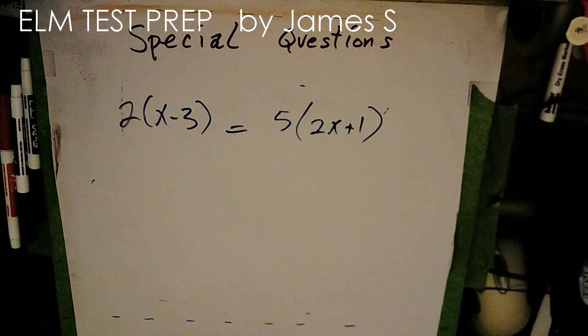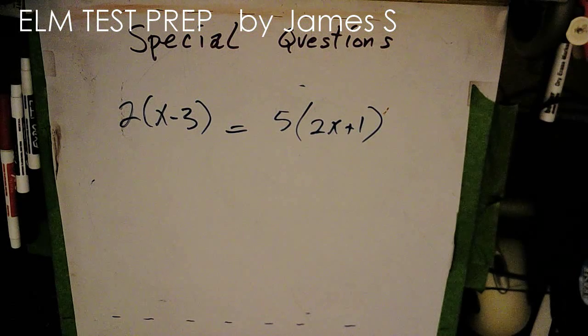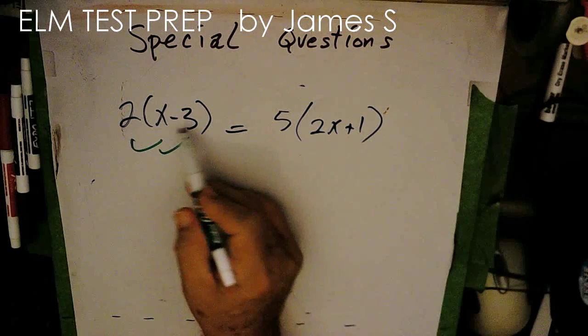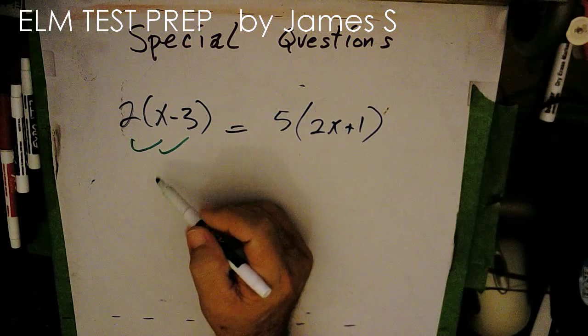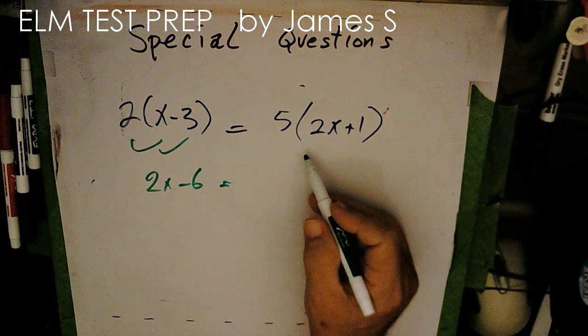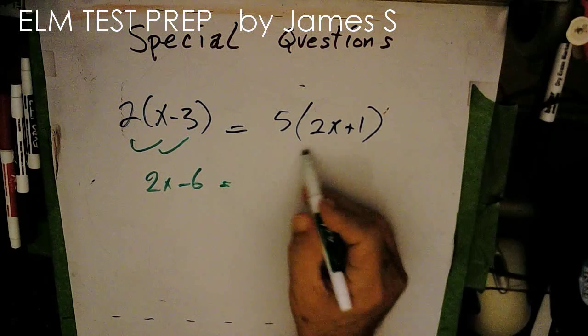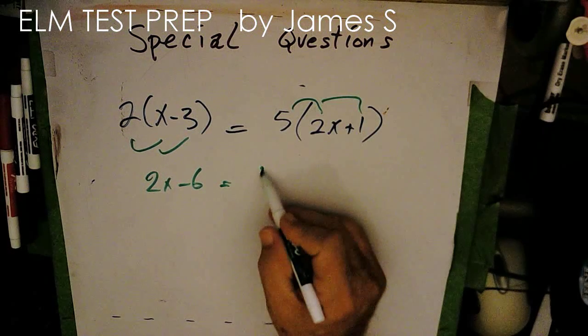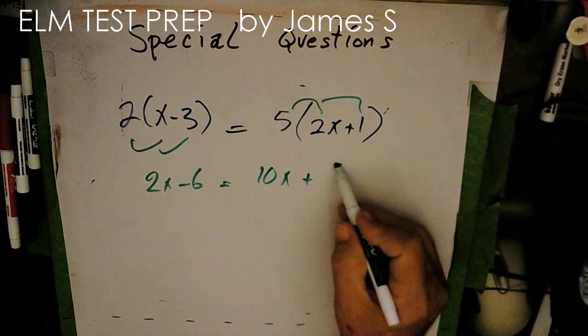Alright, so already this looks a lot simpler. Well, now I'm just going to distribute here because I have 2 terms separated by a negative. So I'm going to get 2x minus 6 equals this over here, 5 distributed here and here. That will be 10x plus 5.